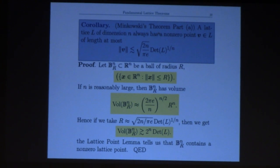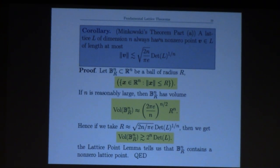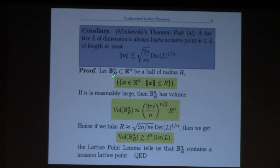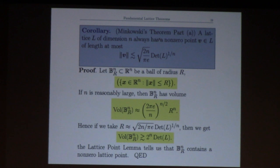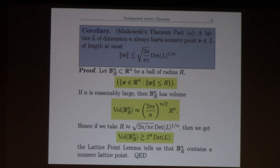Our goal is to find a vector in the lattice that's pretty small. We'll look at balls of radius R in n-dimensional space — the set of x in R^n whose Euclidean length is at most R, a solid ball. If n is reasonably large, its volume is roughly (2πe/n)^(n/2) times r^n. The r^n growth is clear because it's just a unit ball expanded by a factor of r, so the volume is r^n times the volume of the unit ball.